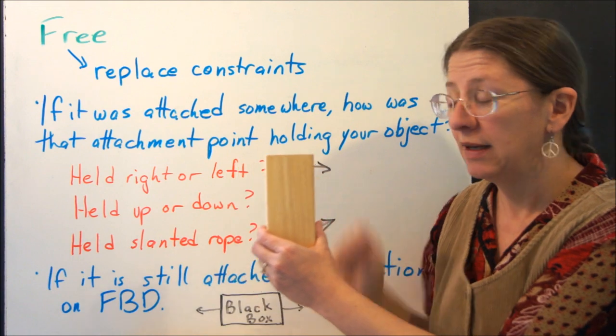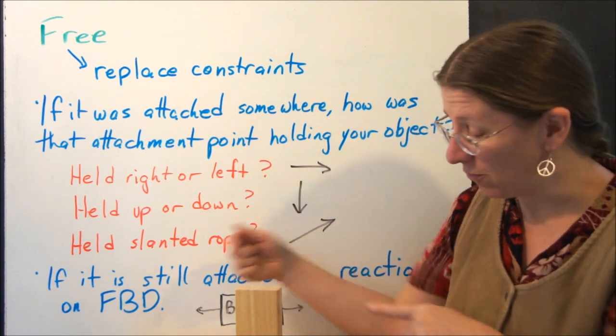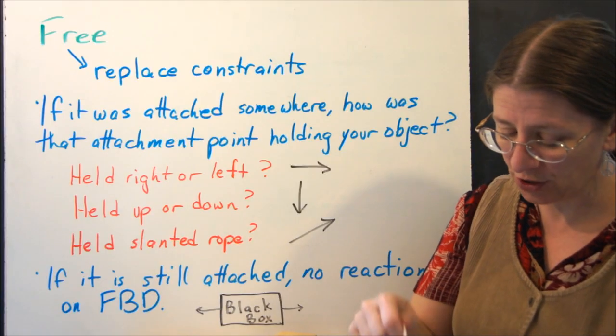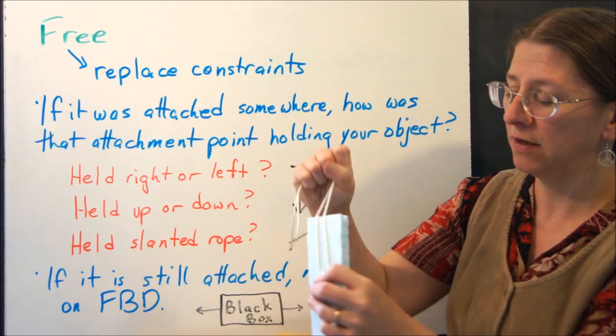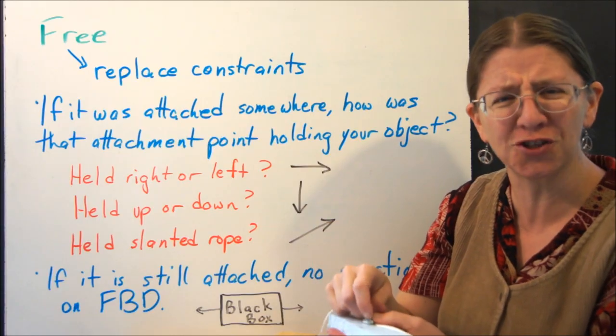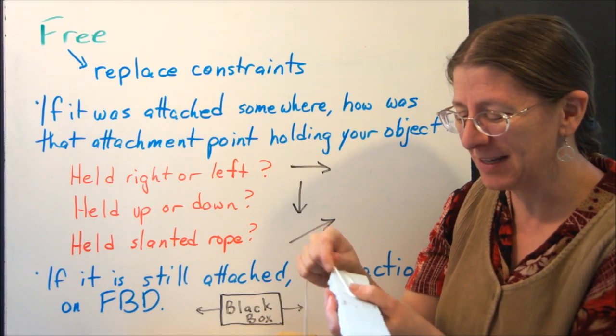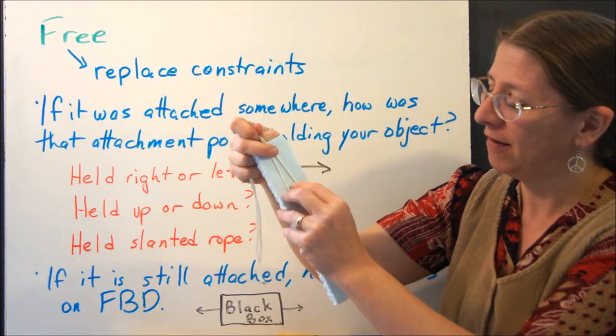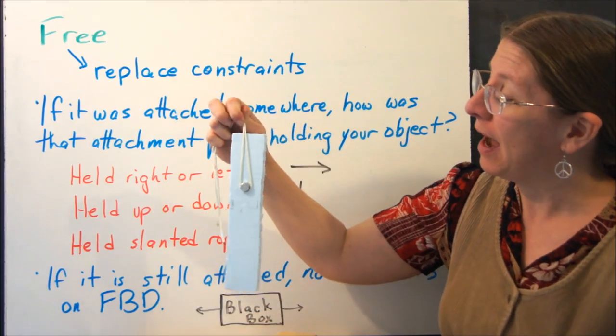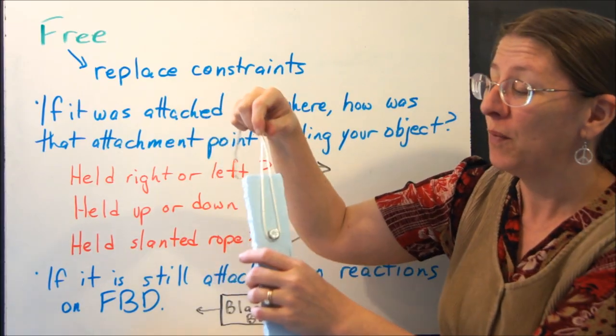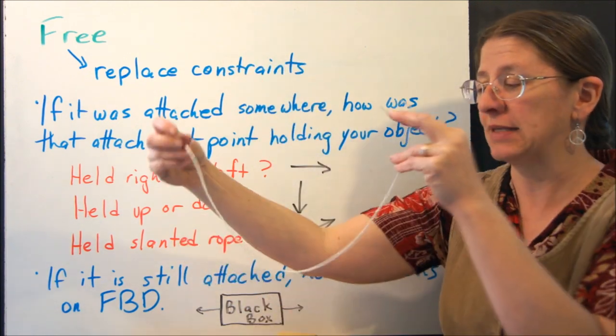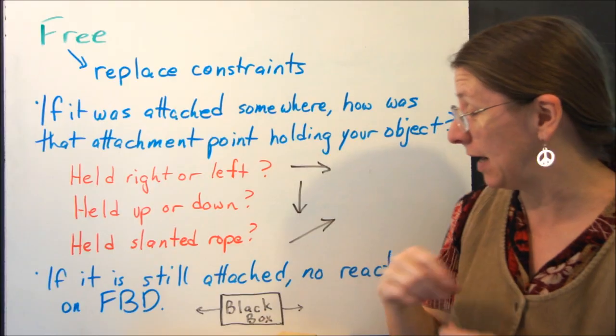So if you were going to draw the free body diagram of this system, you would take away my hands and replace them with forces appropriate to what I was doing with it. If you have a rope attached to your object, when I draw the free body diagram of this particular situation, I'm going to replace that object. I'm going to get rid of the rope. I'm going to replace it with the forces that act along the rope. So if your ropes came out at some sort of angle, then your constraints have to come out at that angle.